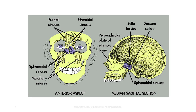The sphenoid sinuses are normally paired and occupy the body of the sphenoid bone. Often only one sinus develops, but never more than two are present. They also vary in size and shape, and are usually asymmetric. They can be found below the sella turcica, and extend between the dorsum and posterior ethmoid sinuses.